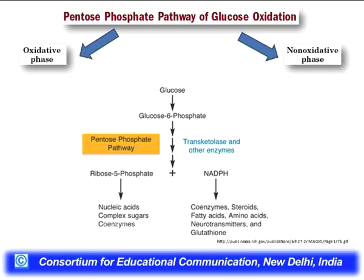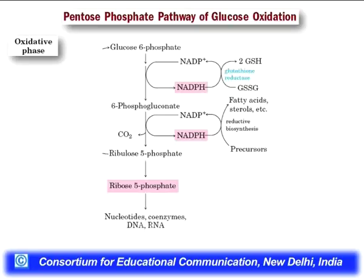In the oxidative phase of the pentose phosphate pathway, glucose 6-phosphate is converted to 6-phosphogluconate, which goes on to form ribulose 5-phosphate with release of a CO2 molecule and formation of NADPH (required for fatty acid metabolism). Ribulose 5-phosphate then forms ribose 5-phosphate. So three molecules of 6-carbon glucose 6-phosphate yield three molecules of 5-carbon ribose 5-phosphate with release of three CO2 molecules, completing the oxidative phase.